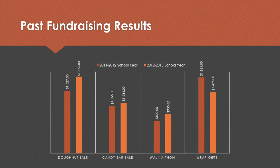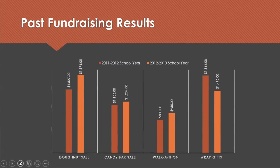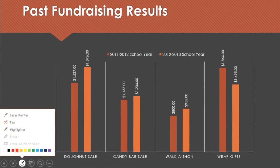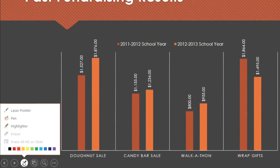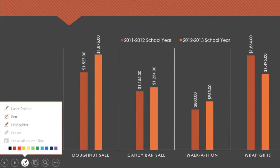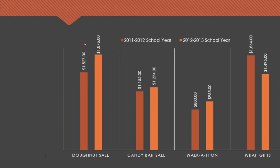Now would be a good time to practice using some of the drawing tools, which can be a good way to call attention to something specific in your presentation. Just open the menu here, and you can turn your cursor into a pen, a highlighter, or even a laser pointer. First select the tool you want, then click and drag to draw anywhere on the screen.